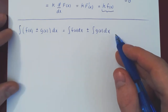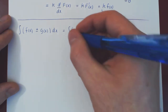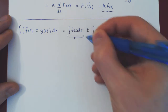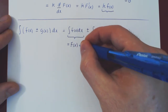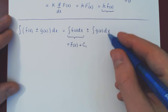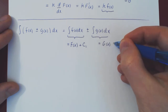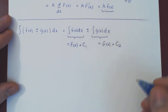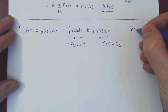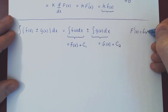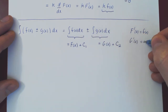This looks intuitive — let's prove it. The integral of f of x dx is an anti-derivative of lowercase f, plus some constant c1. And the integral of g of x dx is an anti-derivative of lowercase g, plus some other arbitrary constant c2. Here, uppercase F is an anti-derivative of lowercase f, so the derivative of uppercase F is lowercase f. And uppercase G is an anti-derivative of lowercase g, so the derivative of uppercase G is lowercase g.